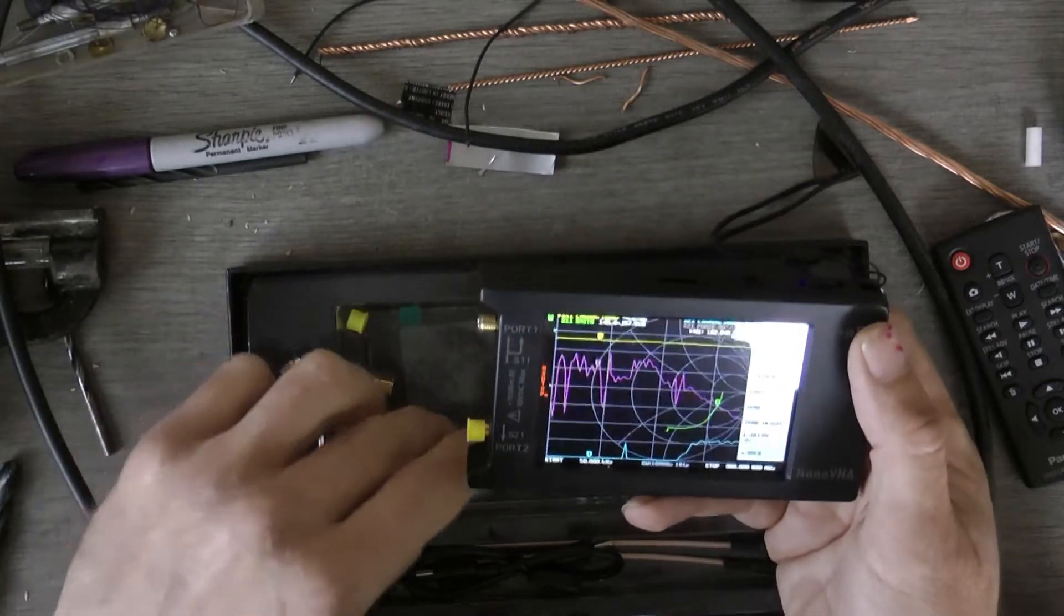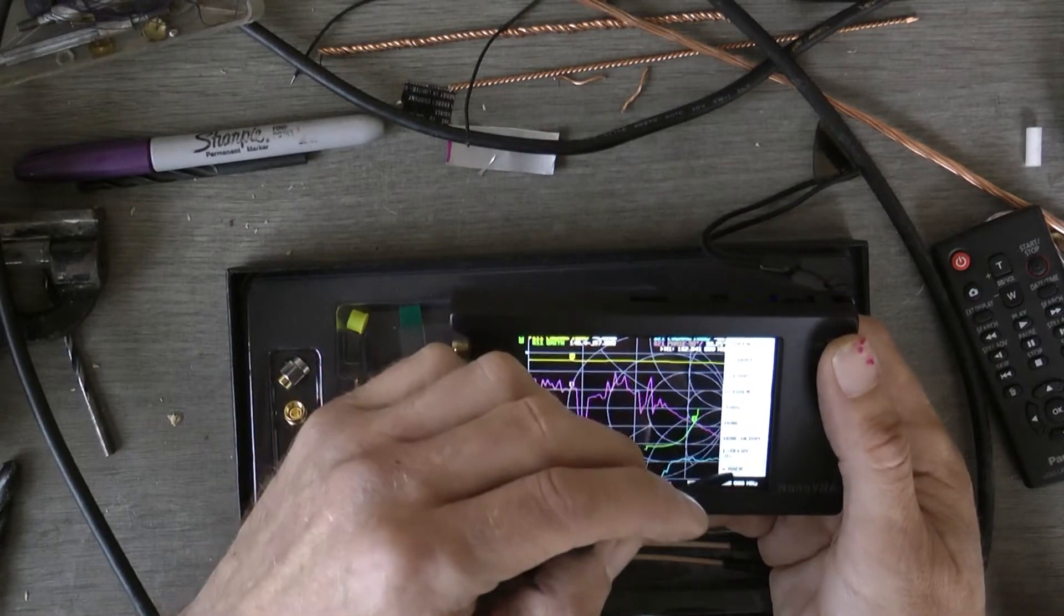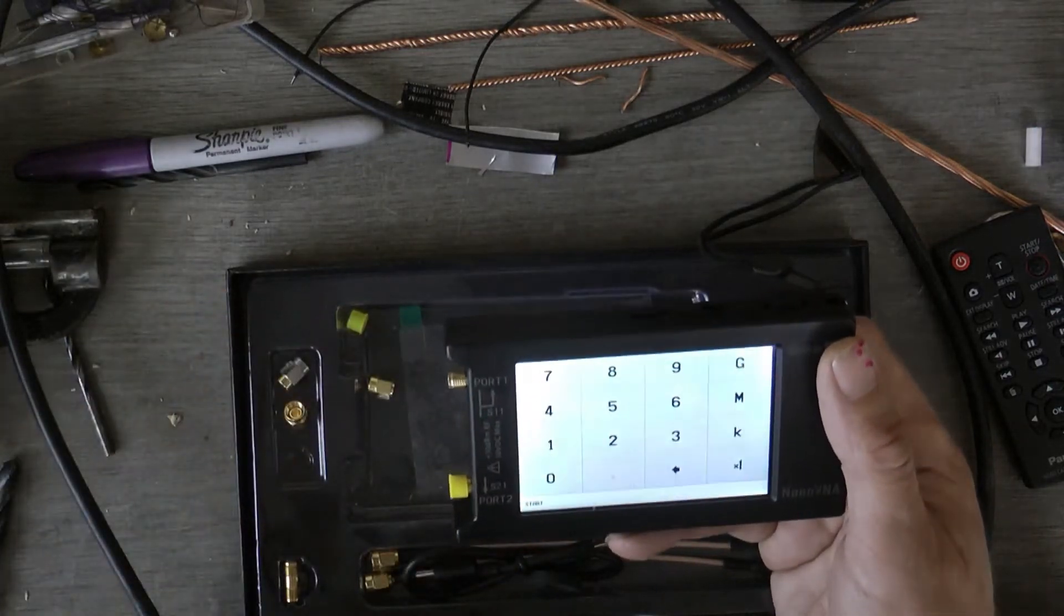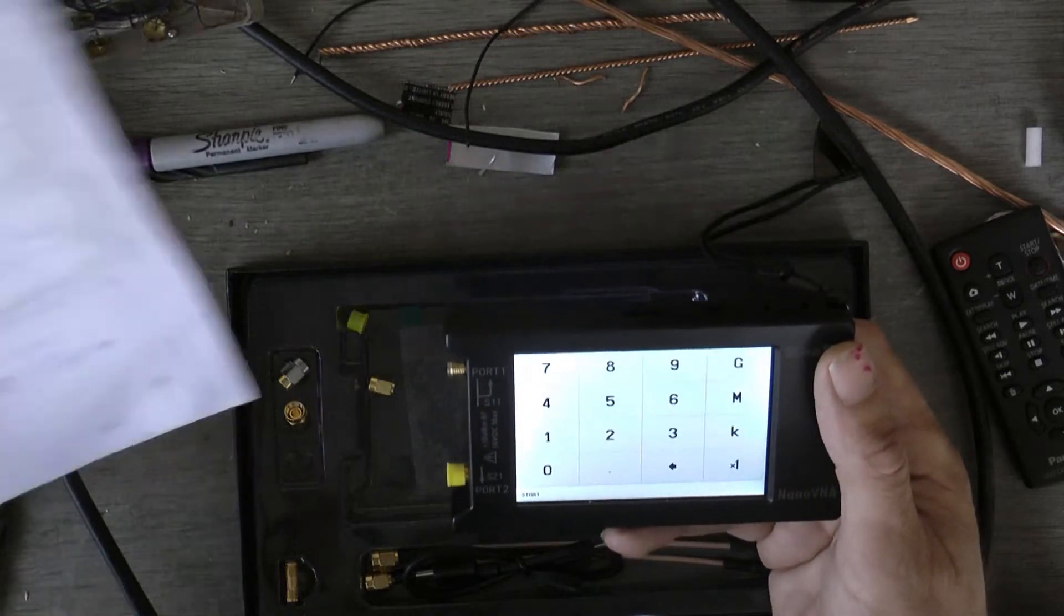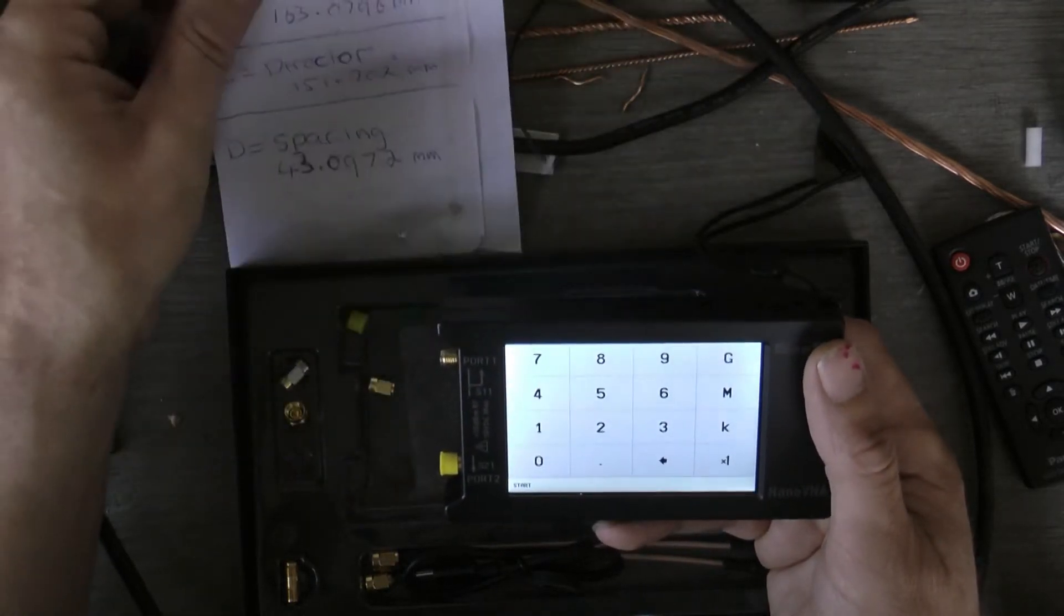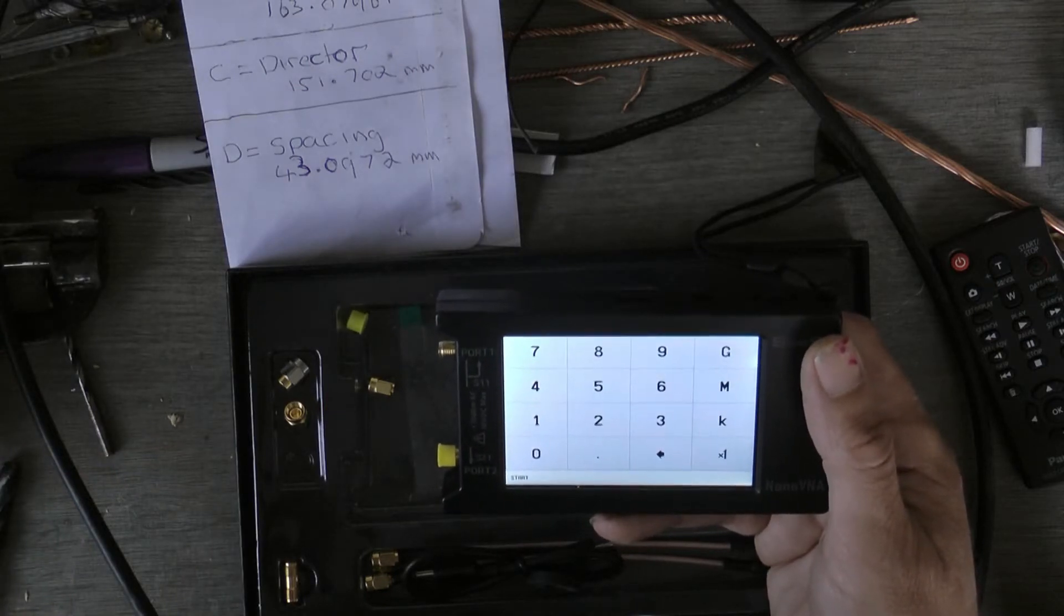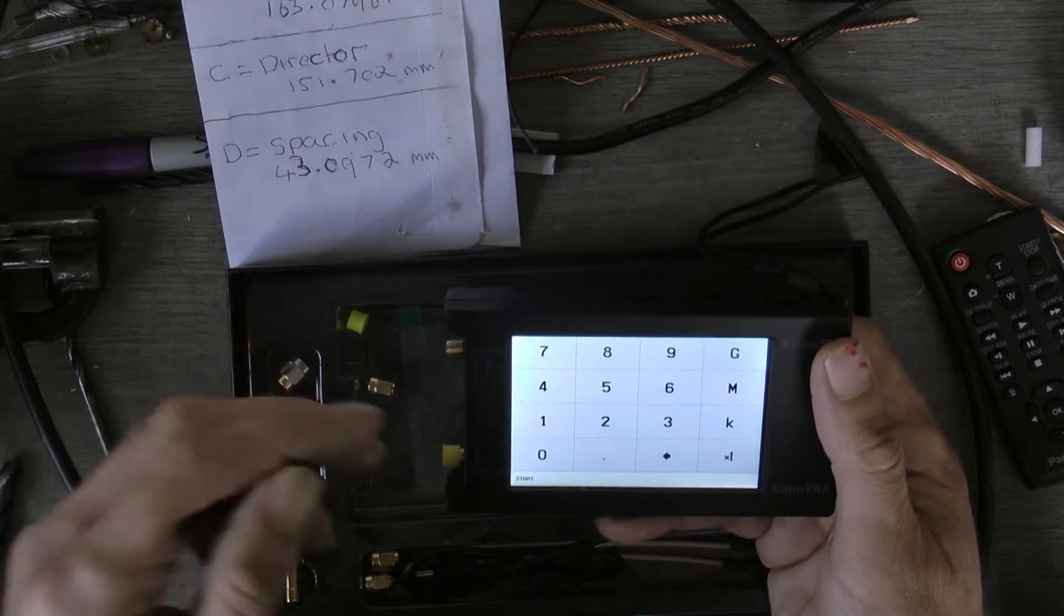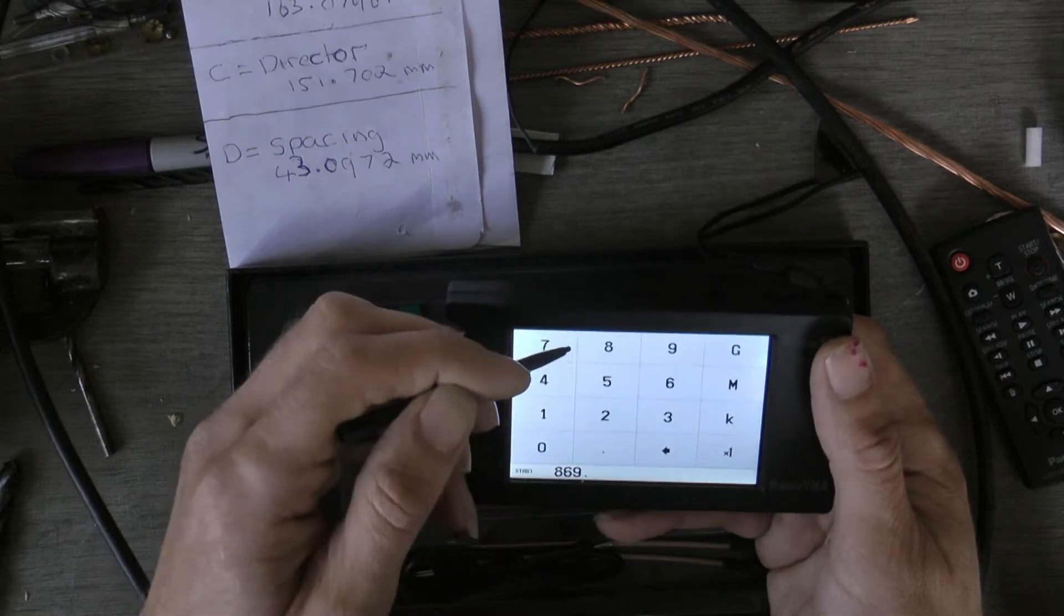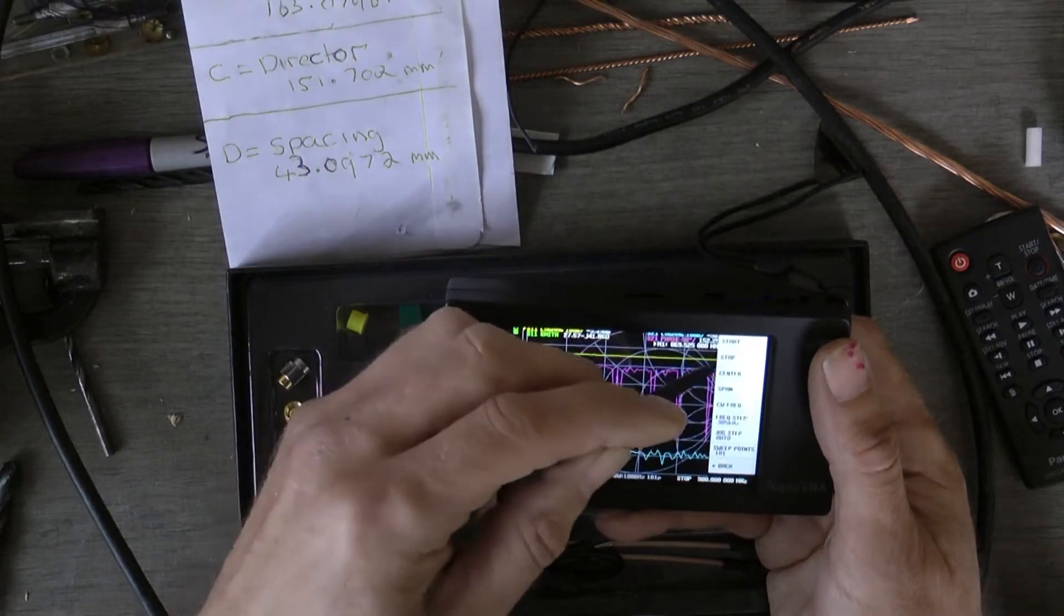Now let's get this - oh yeah I've got to put in a frequency as well. Which one is it? Back, stimulus, start. Well I've cut this for 869.525 megahertz, because that's what my nodes are using currently.